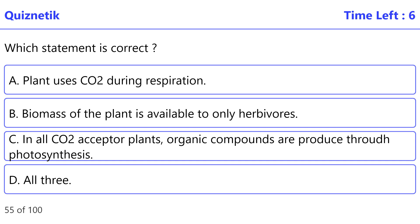Which statement is correct? The correct option is C. In all CO2 acceptor plants, organic compounds are produced throughout photosynthesis.